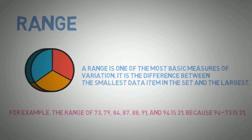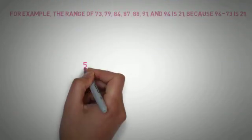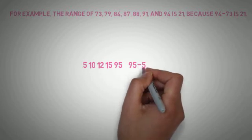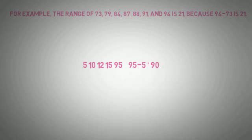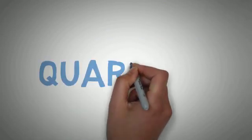The drawback of range is that if a list contains an outlier — something which is far away from the main data — then range is not a good measure. For example: 5, 10, 12, 15, and 95, where 95 is an outlier. When we try to get the range it shows 90, which is misleading.